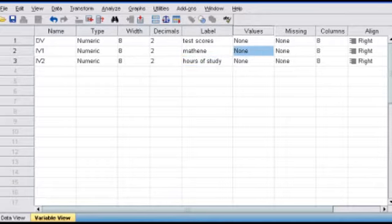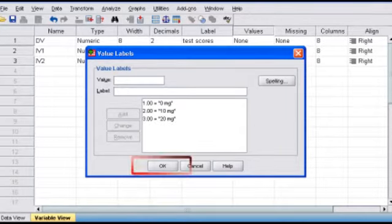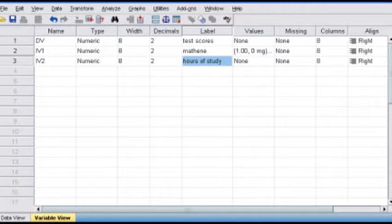Should one of your IVs, or multiple of your IVs, have different levels, you can actually label them in the values column. When you click on it, say for example, our mathene has three different levels, you type in one for zero milligrams, click add, two for ten milligrams, and click add, and so on, until you've labeled all of your levels. Since our other IV hours of study has a single level, there's no need to label it, and we're ready to enter data in our data view.